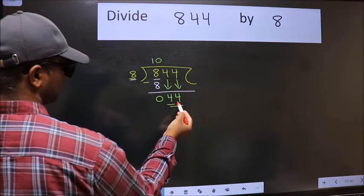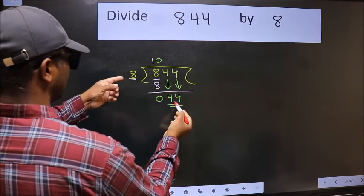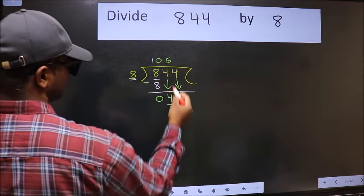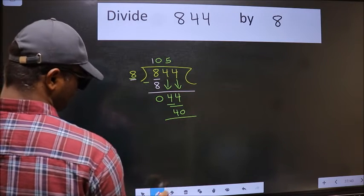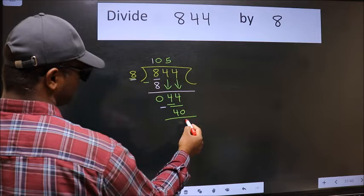Now 44. A number close to 44 in the 8 table is 8 times 5, which is 40. Now we subtract and get 4.